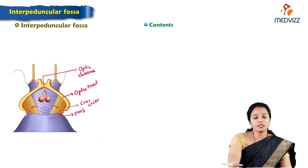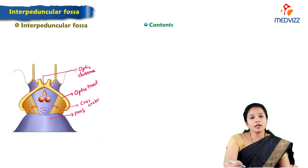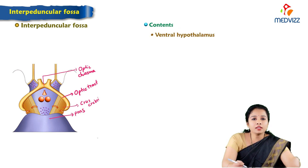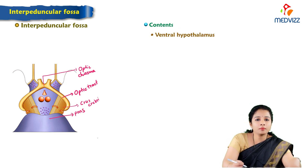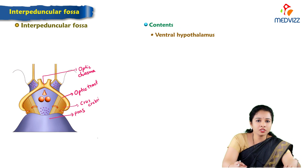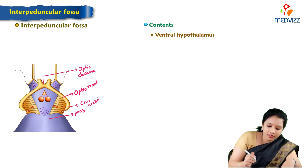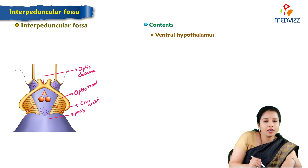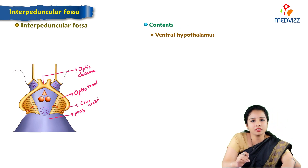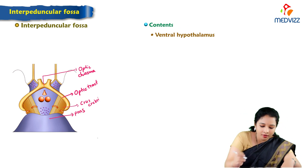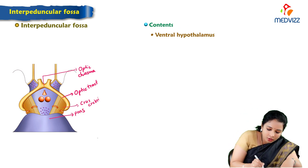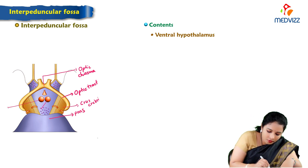Let's see the contents. The contents include the ventral hypothalamus with the following structures. The ventral part of the hypothalamus is seen here, including a pair of mammillary bodies.